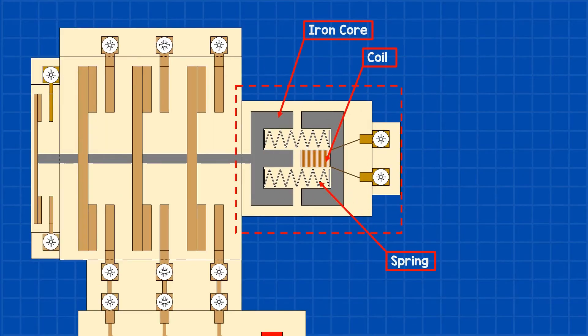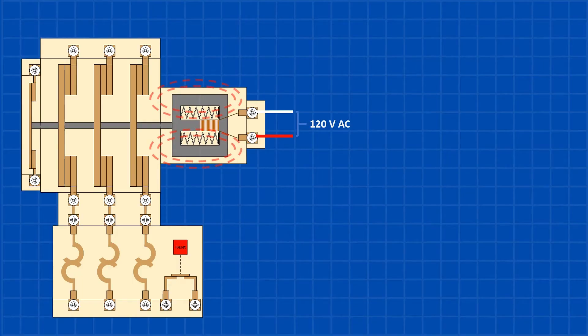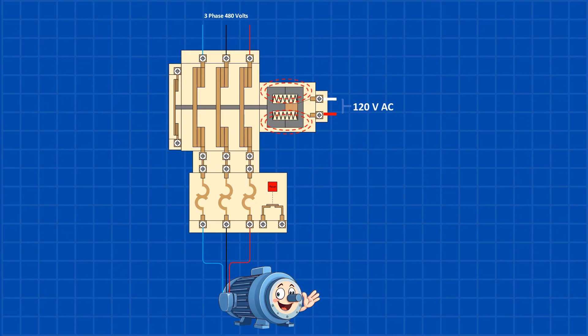The coil typically consists of three main components: an iron core, a main coil, and springs. When the correct voltage, 120 volts AC in this case, is applied to the coil, it creates a magnetic field that draws in the iron core. This movement closes the contacts, enabling power to pass through them and the overload elements, which energizes the motor. The motor continues running until power is removed from the coil.